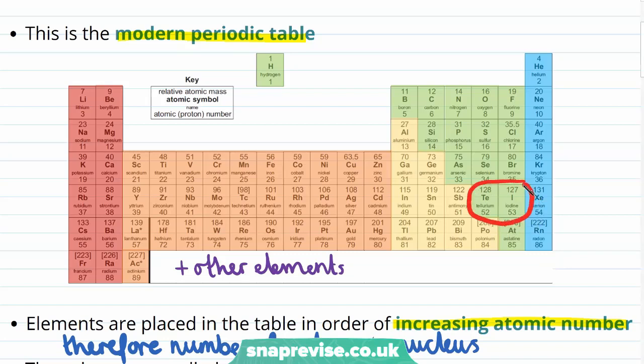For example, if you look at tellurium and iodine, which we mentioned on the previous slide, you can see that if you are ordering in terms of relative atomic mass, iodine would appear before tellurium. And this is what happened in Mendeleev's original periodic table.